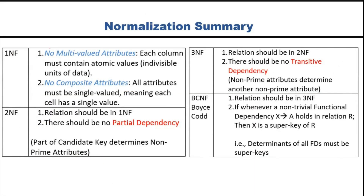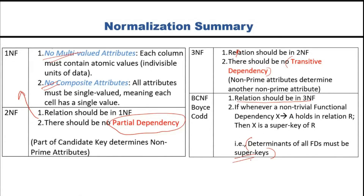Summary: 1NF has two conditions — no multi-valued attributes and no composite attributes. 2NF must be in 1NF with no partial dependency. 3NF must be in 2NF with no transitive dependency. BCNF must be in 3NF and every determinant must always be a super key — meaning they are keys or candidate keys. Thank you for your participation.